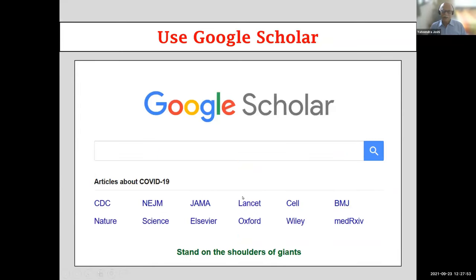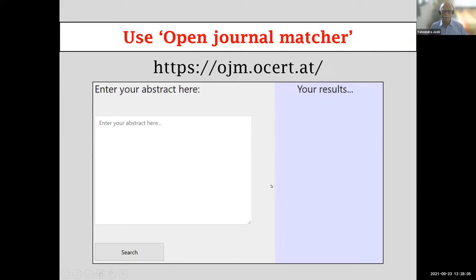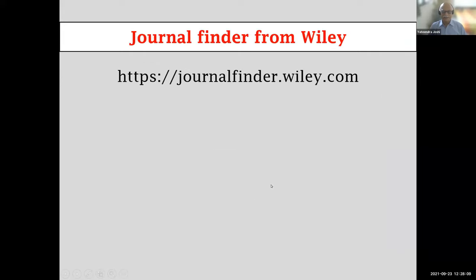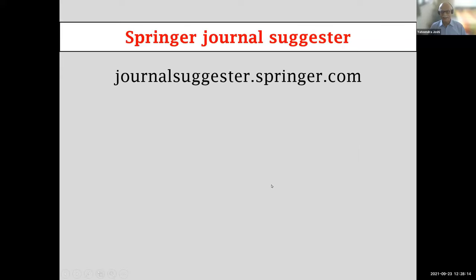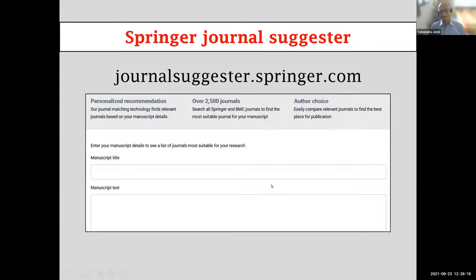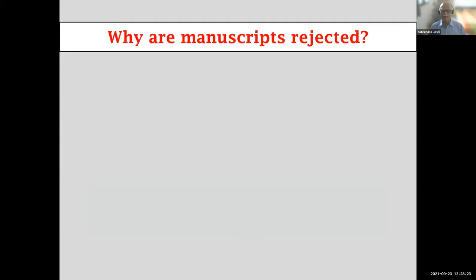To summarize the tools for finding the right journal: you could use Google Scholar and paste the title in the search box; use Manuscript Matcher by Web of Science; use Open Journal Matcher; use Wiley's Journal Finder; or use Springer's Journal Suggester. These are different names but they all work the same way.